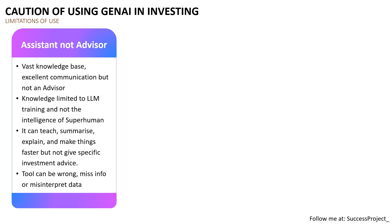As mentioned in the last video, LLMs are trained on a huge amount of data, which means the responses from a Gen AI are limited to that training — not from the real-time intelligence of a super human. While Gen AI can teach you a lot of investing concepts, talk about stocks, summarize data, and provide insights, it cannot give you specific investment advice. Use the information from Gen AI as information, not as prescriptive guidance for making decisions.